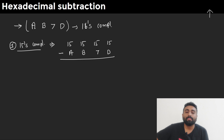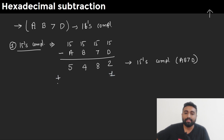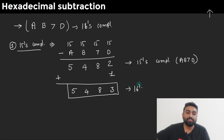All digits will be subtracted from 15: 15 minus D (13) is 2, 15 minus 7 is 8, 15 minus B (11) is 4, and 15 minus A (10) is 5. So the 15's complement of AB7D is 5482. Now if you add 1 to this 15's complement, you get the 16's complement: 2 plus 1 is 3, and the remaining digits stay the same — so 5483 is the 16's complement of AB7D.